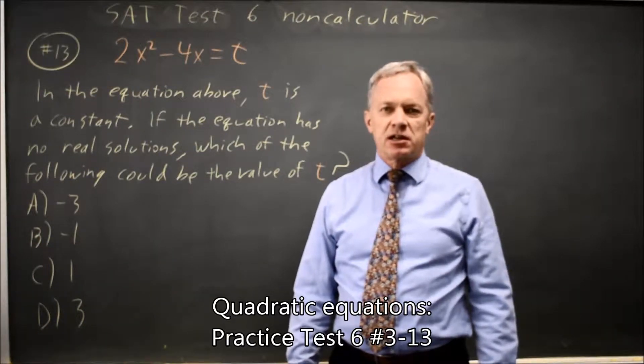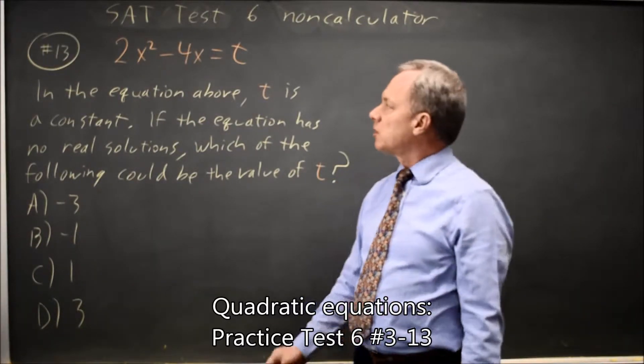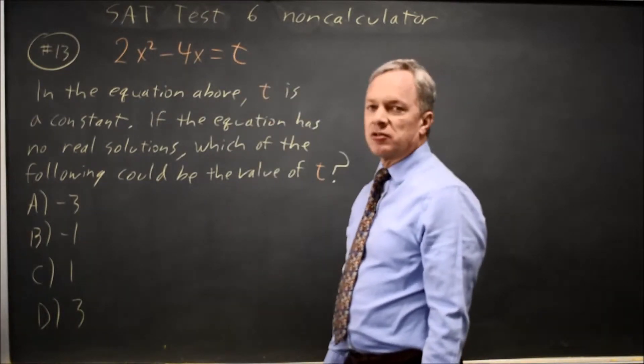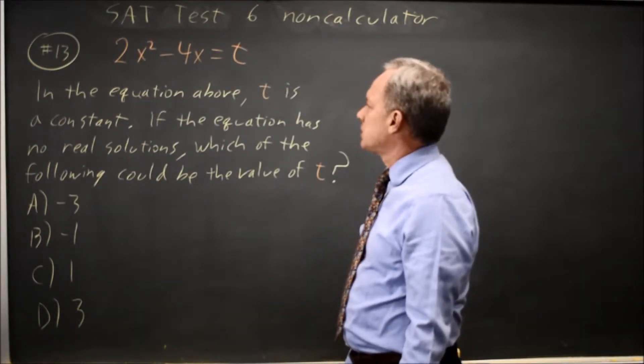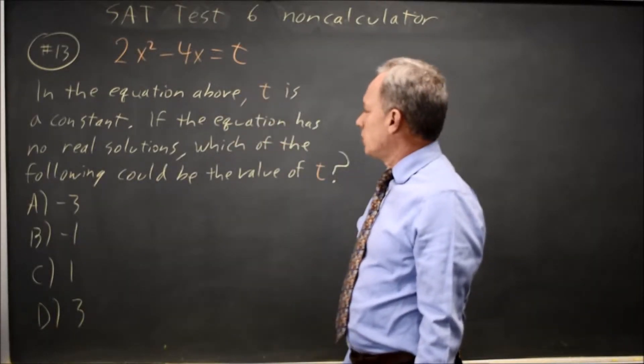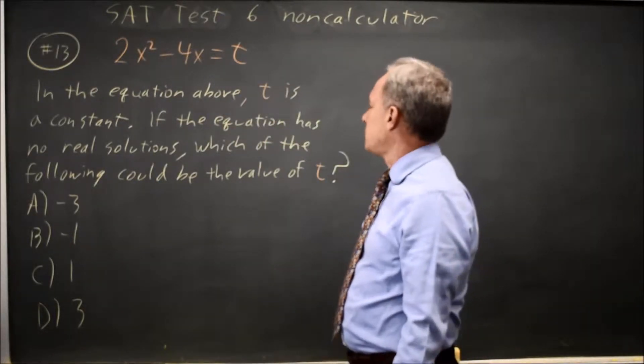This is SAT Test 6, non-calculator question number 13. College Board gives us a quadratic equation with t instead of a regular number for the constant and asks if this equation has no real solutions, which of the following could be the value of t?